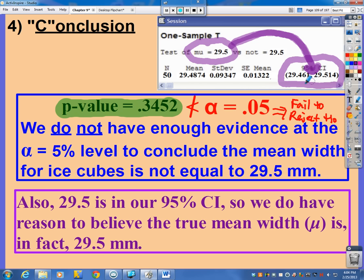And 29.5 is inside here. So we don't want to reject this value, which is our null hypothesis. So we would also, down here, we would fail to reject the null hypothesis because 29.5 is inside this confidence interval. Okay, so I said here, since 29.5 is in our 95% confidence interval, we do have reason to believe that the true mean width mu is in fact 29.5. It is possible that that really is the legitimate mean width for all the ice cubes being produced.